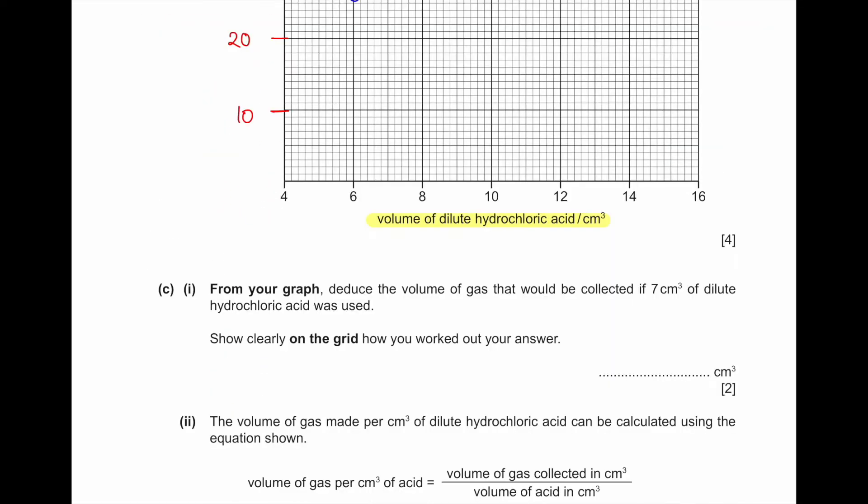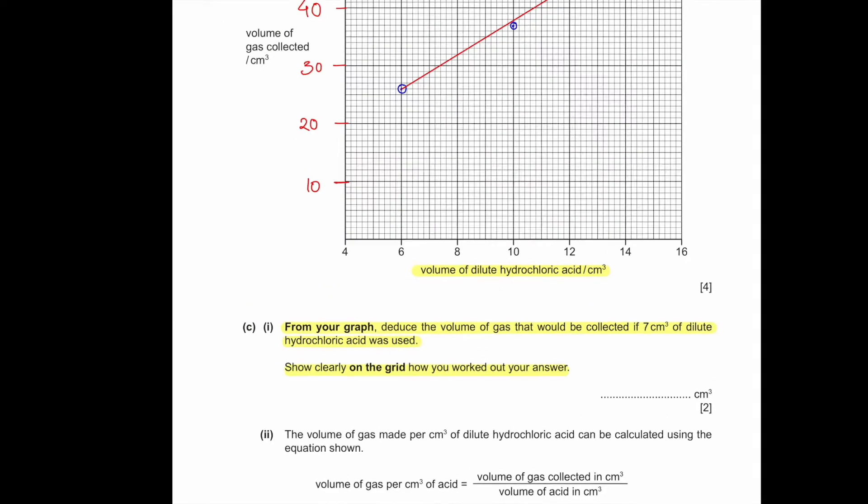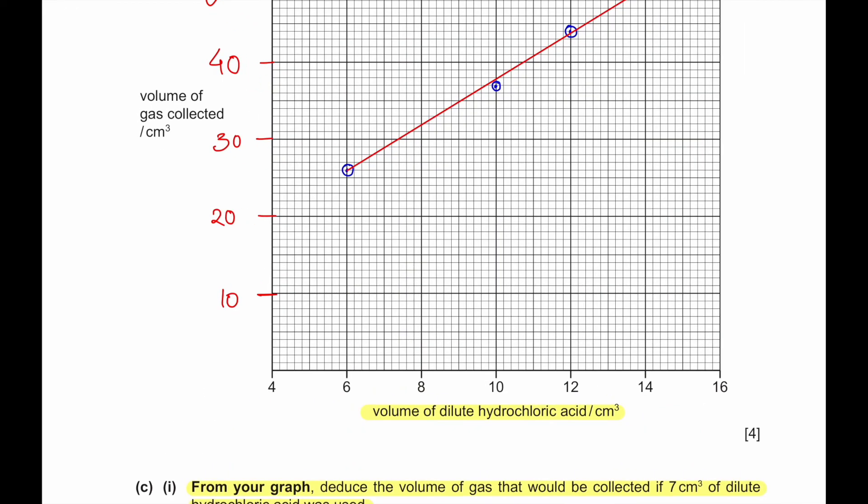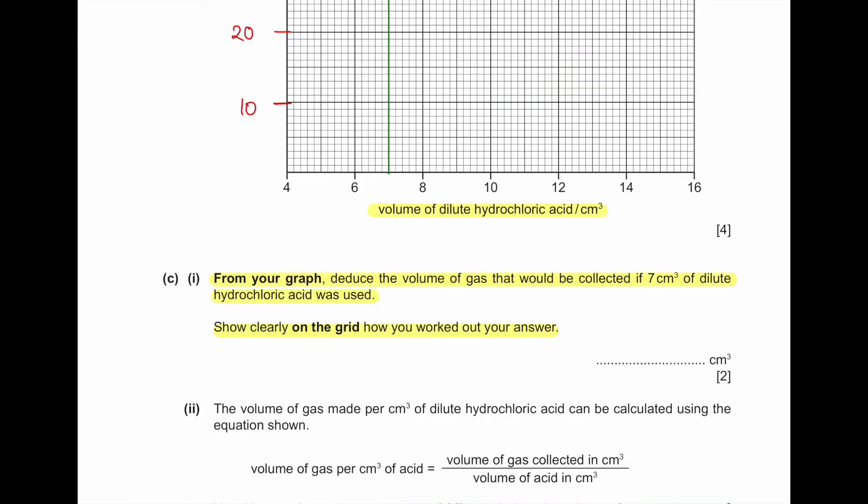Now the question says, from your graph, deduce the volume of gas that would be collected if 7 cm³ of dilute hydrochloric acid was used. Show clearly on the grid how you worked out your answer. Whenever the question says show clearly how you worked out your answer, that means in a graph, we will have to show extrapolation. So this is the 7 cm³, and then the volume of gas that we would collect would be 29. So it will be 29 cm³.